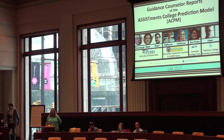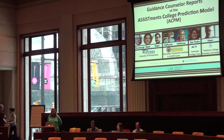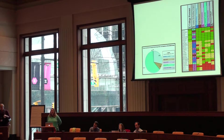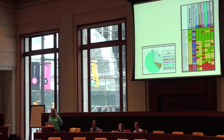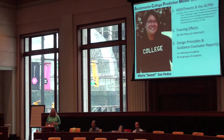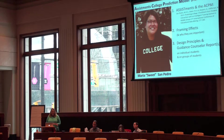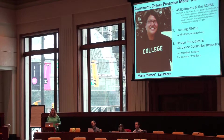Today we're going to talk about a report that we've designed based on prediction about whether or not kids will go to college, which were made using data from the ASSISTments model. This is basically what the reports look like. We're going to start by talking about what the ASSISTments college prediction model is, what kind of information is in it, then talk a little bit about framing effects and why we need design principles, and finally the design principles integrated with the actual designs of the guidance counselor reports.